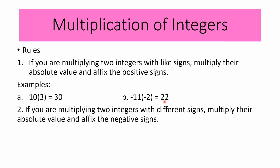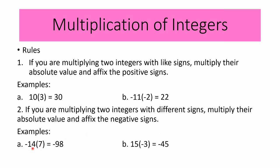For the second rule: if you are multiplying two integers with different signs, multiply their absolute values and affix the negative sign. When multiplying two integers with different signs, the product is always negative. For example, negative 14 times 7: 14 times 7 is 98, and since we have different signs, the product is negative 98. For letter B, 15 times negative 3: 15 times 3 is 45, and since we have different signs, the product is negative 45.